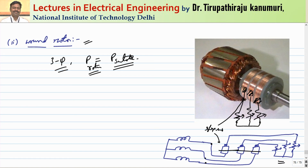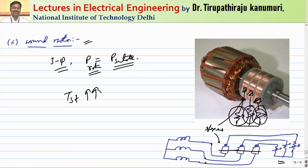By controlling the value of the external resistance connected via brushes and slip rings, we can control both torque and speed. For applications requiring high starting torque, variable torque, or variable speed, we go for the slip ring induction motor. However, the problem with the slip ring induction motor is that because there is a winding, there is a chance it will get damaged, so maintenance cost is more compared to the squirrel cage motor. The starting torque is more in this case because the rotor resistance R2 is higher.